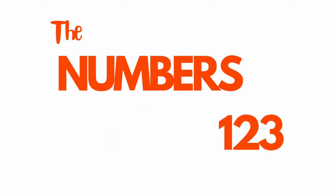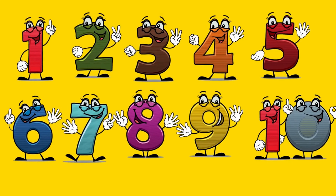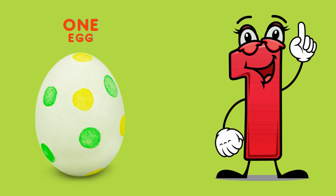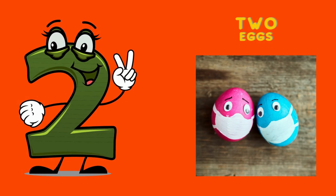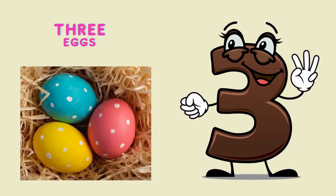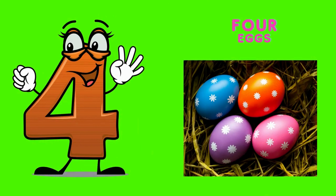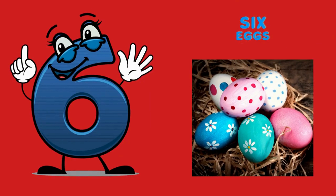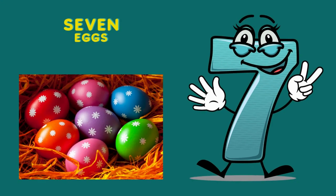Let's learn the numbers from one to ten. One — one egg. Two — two eggs. Three — three eggs. Four — four eggs. Five — five eggs. Six — six eggs. Seven — seven eggs.